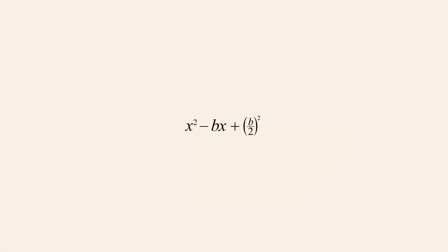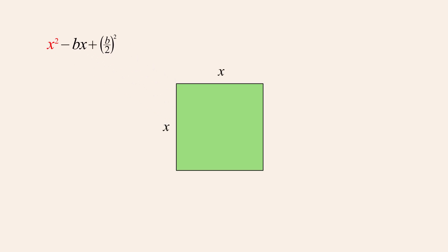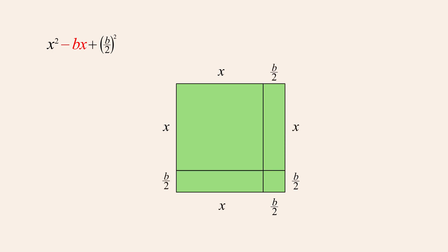Just as before, we can represent the x-squared term as a square with sides of length x, the b over two-squared term as a square with sides of length b over two, and the bx term as two rectangles with sides of length b over two and x. However, since the bx term is negative, the area of those two rectangles must be subtracted from the other areas instead of added.